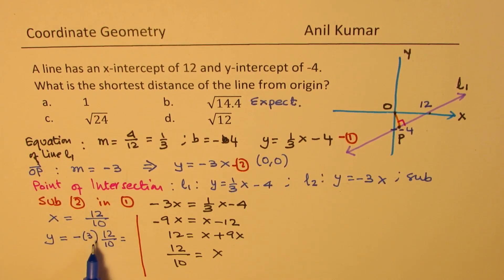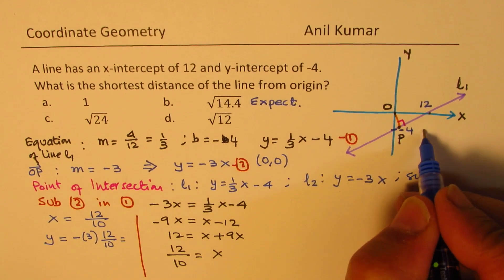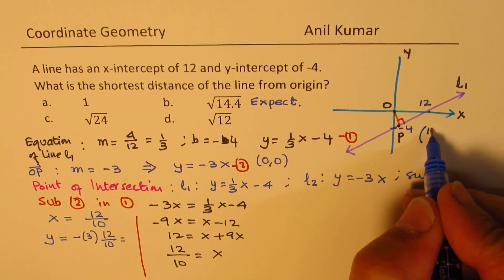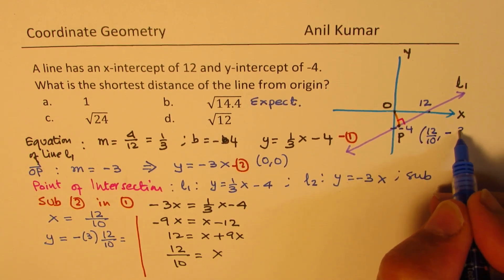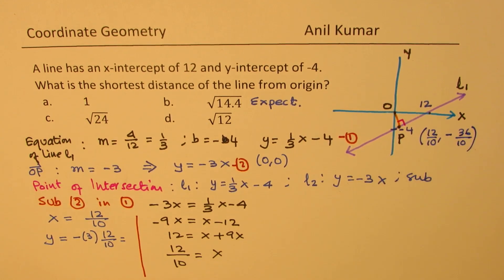This is better since basically we need to find the distance. So, we get the point P, which is 12 over 10. And then, we have minus 3 times this. You may write 36. Okay. 36 over 10. 3 times 12.